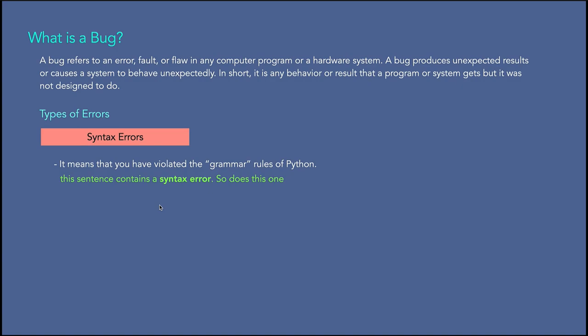If there is a single syntax error anywhere in your program, Python will display an error message and quit — you will not be able to complete execution. During the first weeks of your programming career you'll probably spend a lot of time tracking down syntax errors. However, as you gain experience you'll make fewer errors and find them faster. For example, in our first line of code, if we miss the closing double quotation mark, the code will not be executed — that is a syntax error.